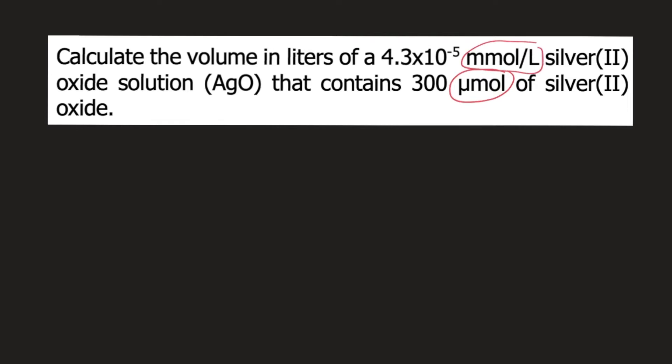To solve this problem, we need to convert first 300 micromole to millimoles. So how do we do that? We know that 1 millimole is equivalent to 1,000 micromole. So you put 1,000 micromole at the bottom and on top you put 1 millimole so that micromoles will cancel. Now you have millimoles.